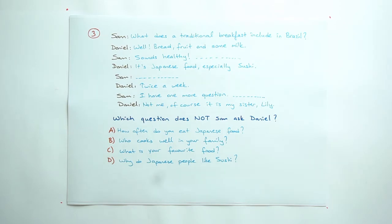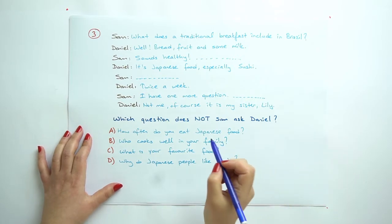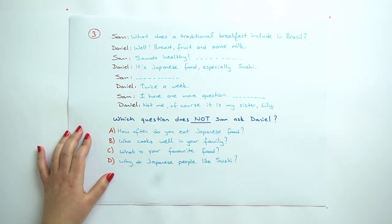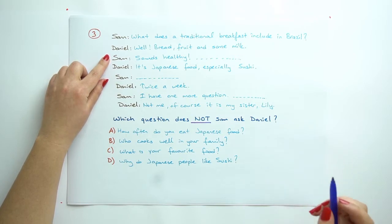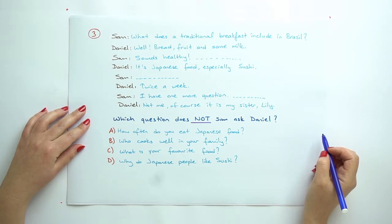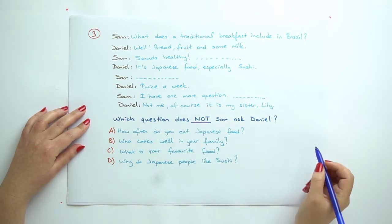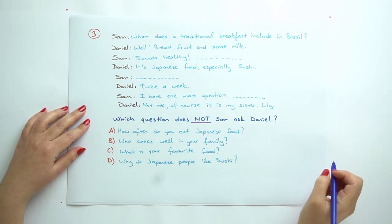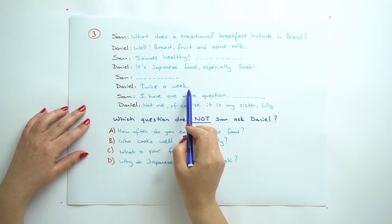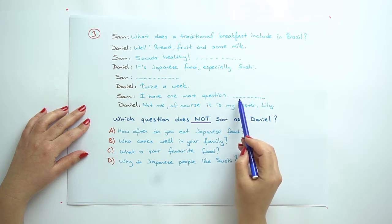Question 3: Which question does not Sam ask Daniel? Sam: what does a traditional breakfast include in Brazil? Daniel: well, bread, fruit, and some milk. Sam: sounds healthy.